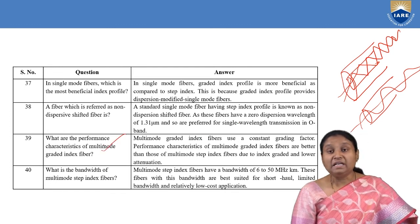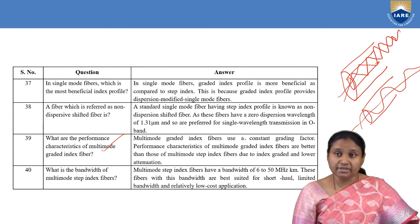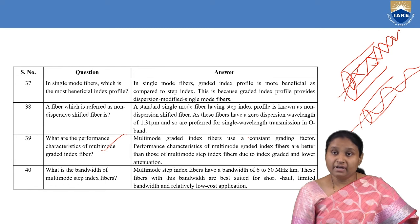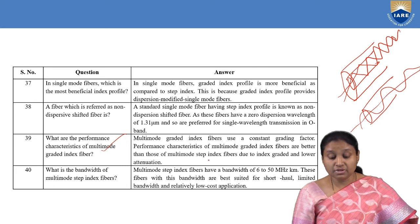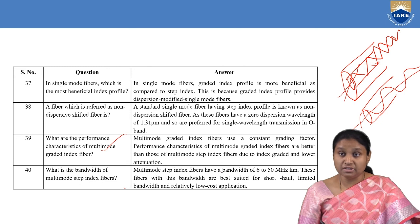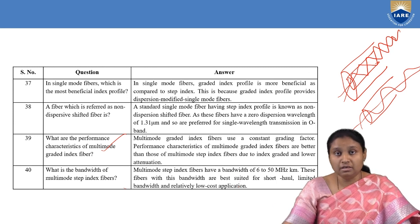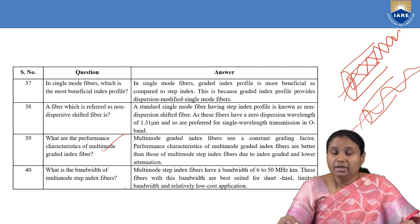What are the performance characteristics of multi-mode graded index fibers? They use a constant grading factor for better performance and have lower attenuation. What is the bandwidth of multi-mode step index fibers? Multi-mode step index fibers have a bandwidth of 6 to 50 megahertz, making them best suited for short-haul, limited bandwidth, and relatively low-cost applications.